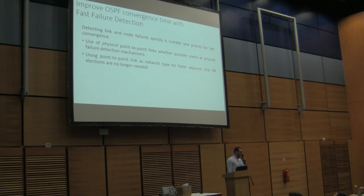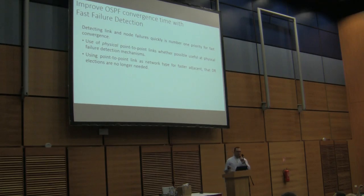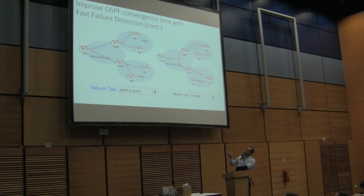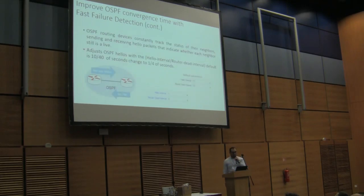The techniques we need to use: first, rely on physical connectivity — detect failure via physical connection. Then, we can use a configuration that sets our network type to point-to-point. This means there is no need for DR or Designated Router selection. Here, for example, the old configuration has the OSPF network type as broadcast, and we will change all routes connected to each other to point-to-point and set the network type as point-to-point.